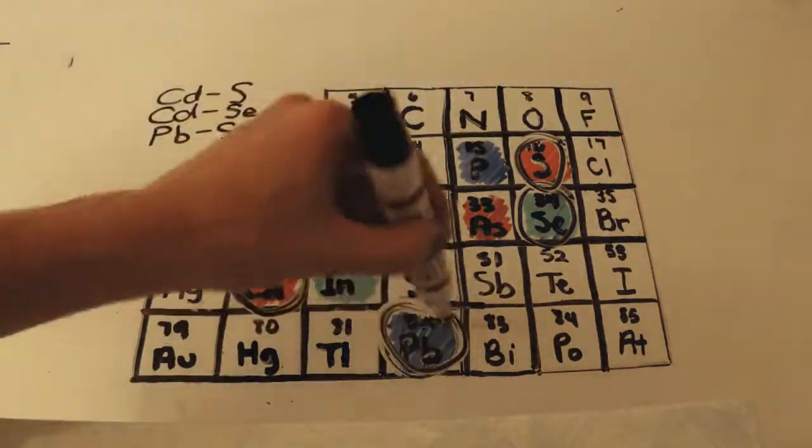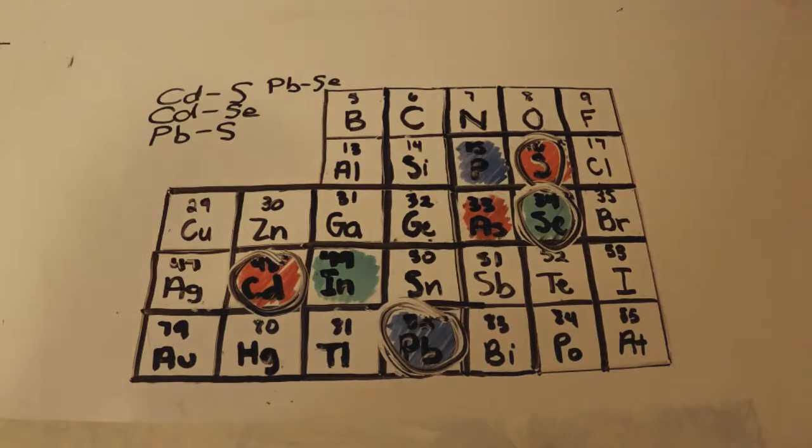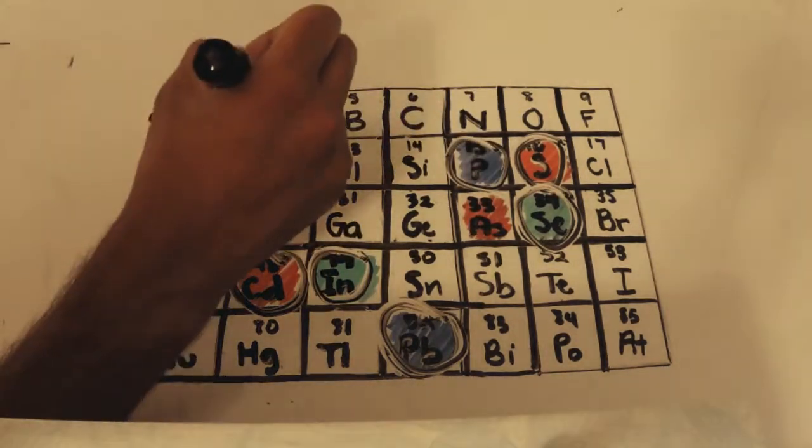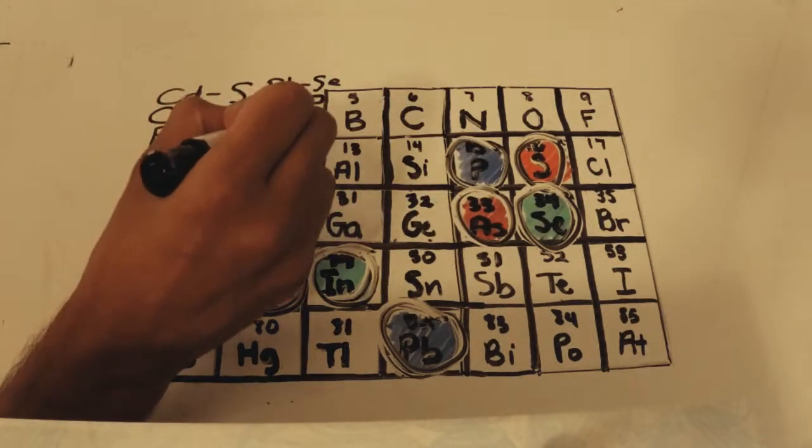The core can also be groups 4 to 6 such as lead sulfide and lead selenide, or groups 3 through 5 such as indium phosphide or indium arsenide. The shell is usually composed of zinc sulfide. The easiest way to explain how a quantum dot works is by comparing it to the hydrogen atom.